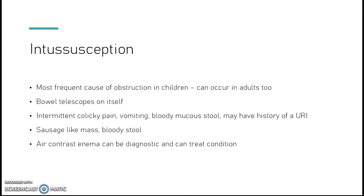Intussusception is the most frequent cause of intestinal obstruction in children, though it can occur in adults as well. The bowel telescopes on itself. Patients will have intermittent colicky pain, vomiting, bloody mucousy stool, and often a history of an upper respiratory infection. Sometimes a scan will be negative because the bowel can reduce and then telescope again. Look for the sausage-like mass and bloody stool. An air-contrast enema can be both diagnostic and therapeutic.